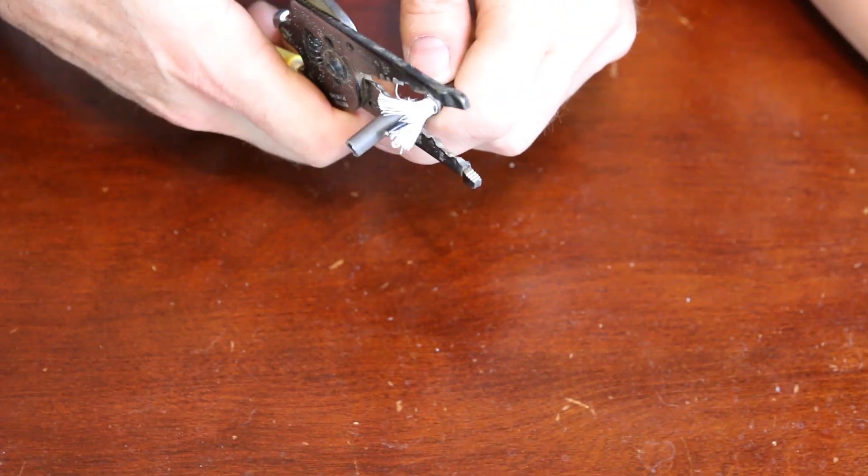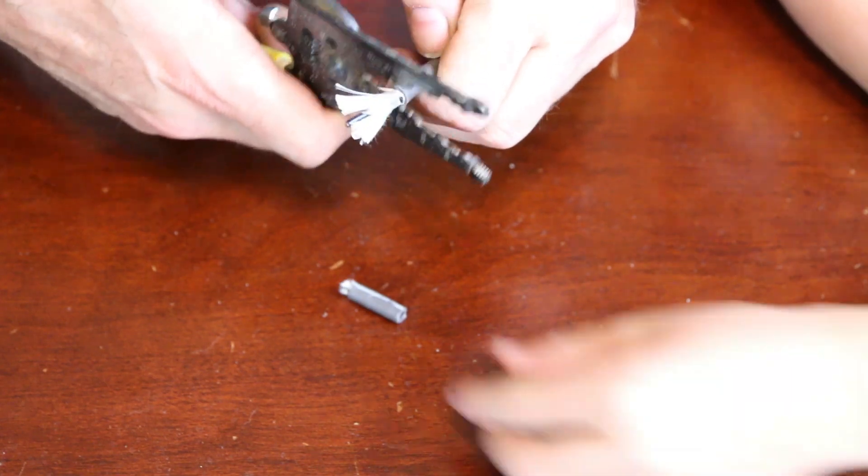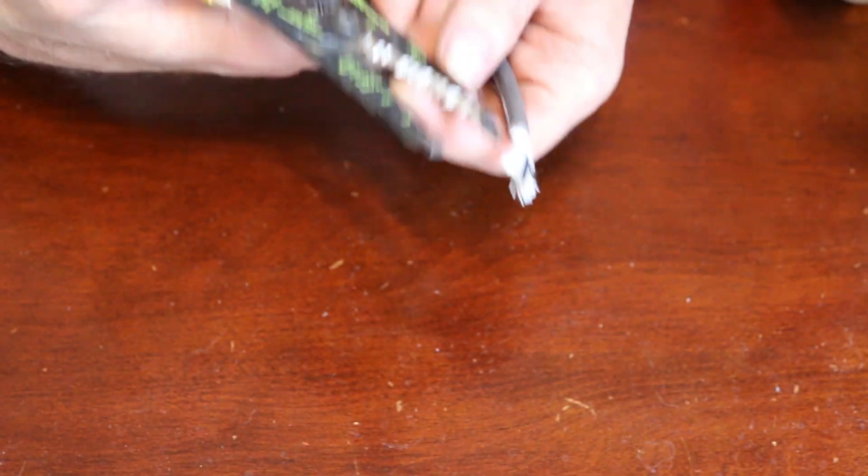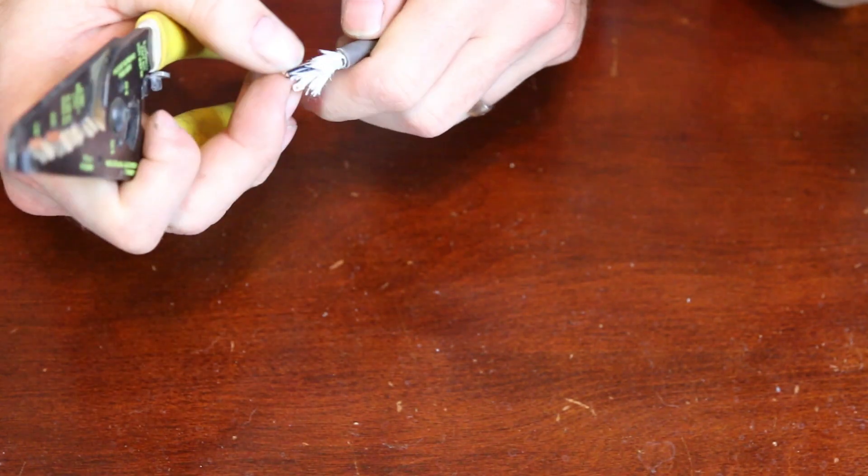And then, you see how I did that? I grabbed the sheath with the claw part here, and then I pulled, and it pulled right off.